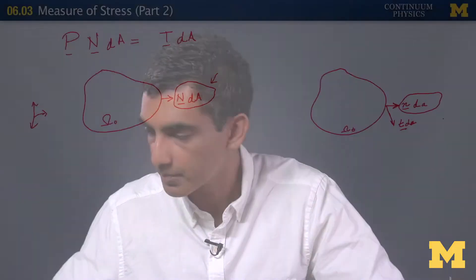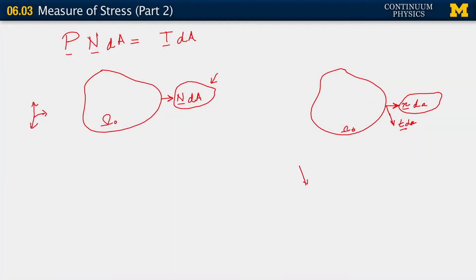The way to understand this — and I understand the possibility of confusion here — is the following. The force is a spatial force. That's where it exists. A fundamental property of a vector in space is that you can move it around. This is not a position vector. So when this vector goes there, we call it t·dA — it's the same vector, which we are now moving and bringing out here. It just so happens that we've pasted it to the reference configuration, attached it to a point on the reference configuration. But it is still a vector that was living in space, brought here.